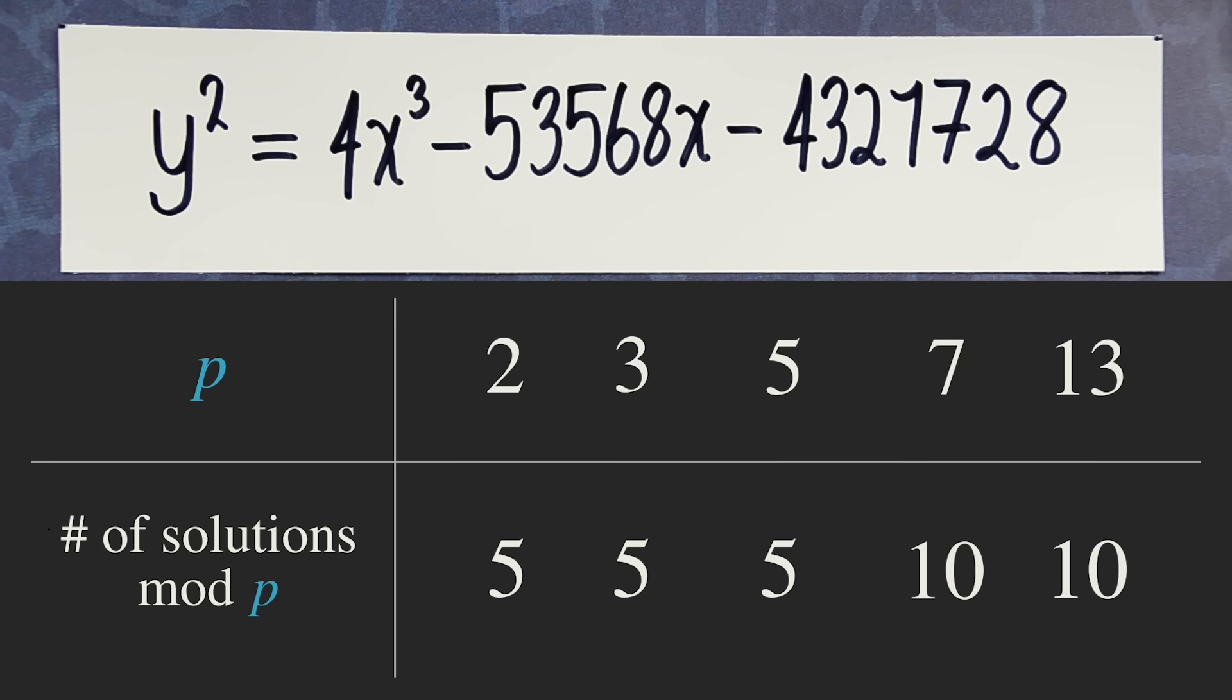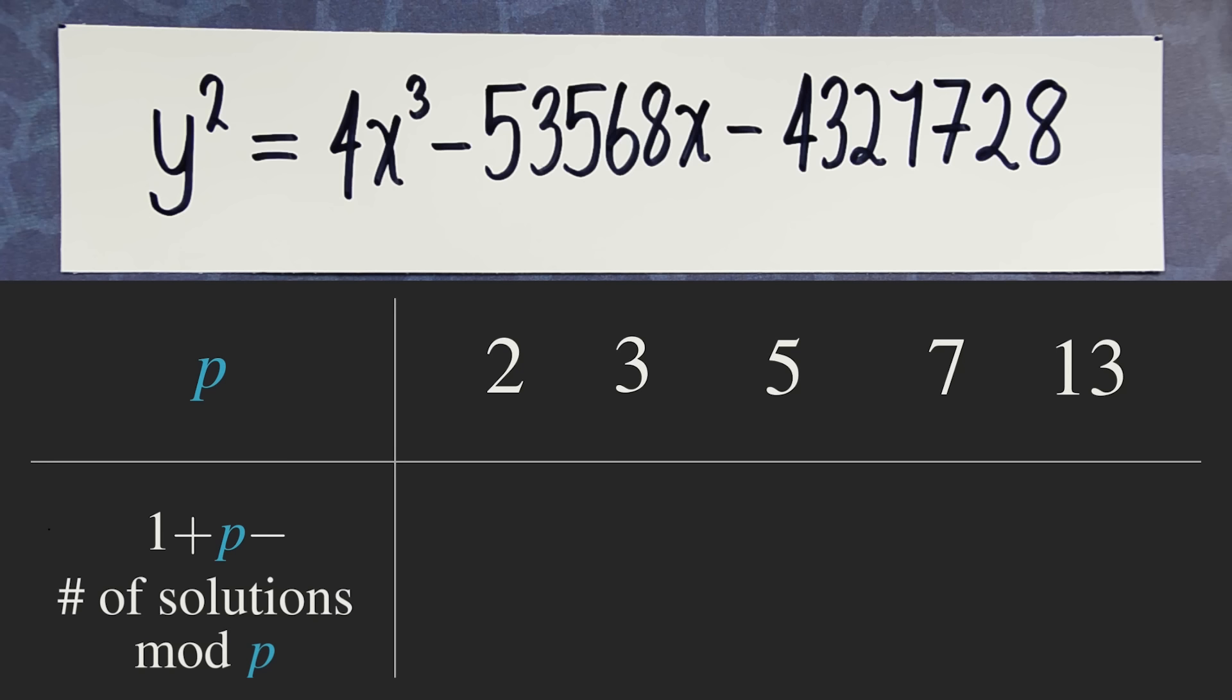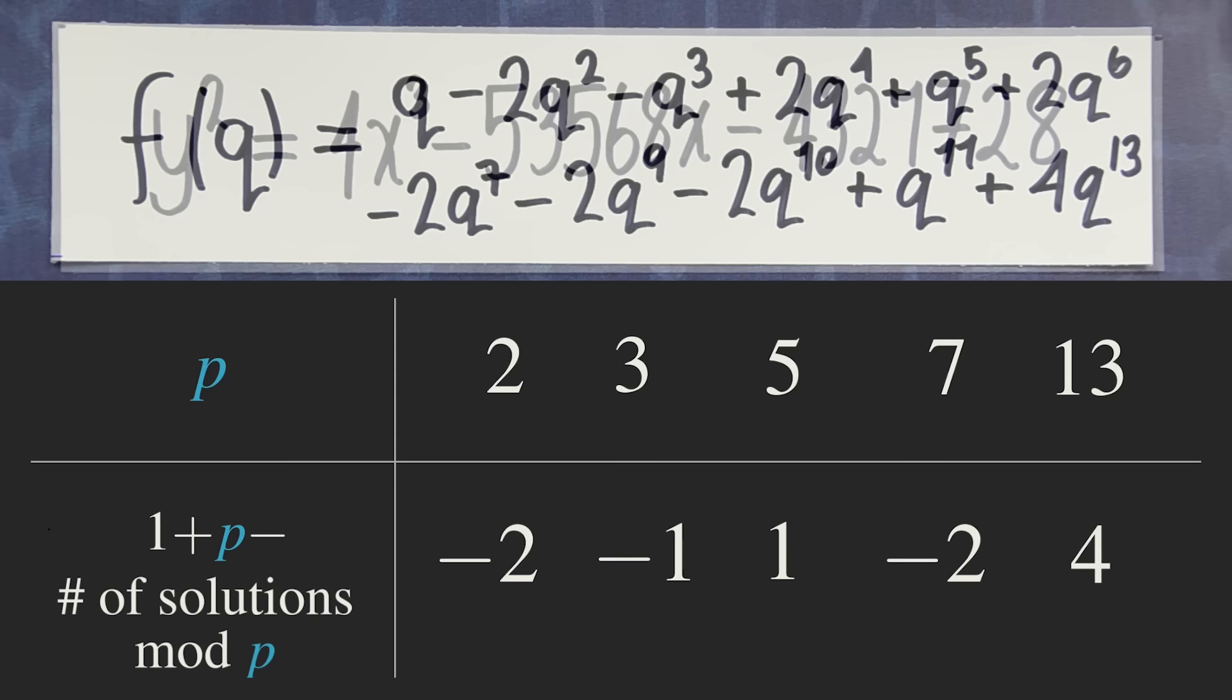Here comes the magic. Instead of considering the number of solutions mod p, consider this slightly weirder thing: 1 + p minus the number of solutions mod p. Here are the updated numbers. The point is, these numbers exactly match the coefficients of our modular form.